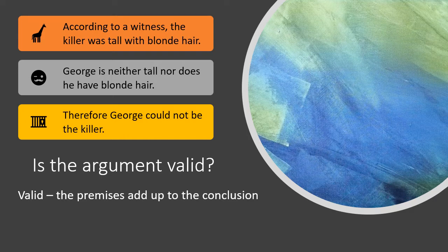The one thing you don't want to do with a valid argument is attack the logic, because this does logically fit — you can derive the conclusion from those premises. For an invalid argument, you simply point out that the logic doesn't add up. For a valid argument, you move toward the premises and ask about their reliability or truthfulness, because you can concede that the conclusion certainly follows from the premises given.